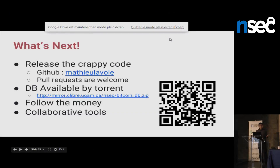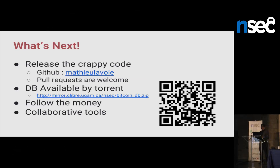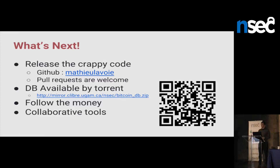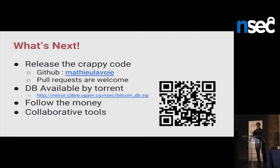What's next for my tools: release the crappy crawler code so you can crawl the network. You can take the DB from there and continue crawling. The DB that will be available was made the Monday before this week, so you can continue crawling from that block and go further. That gives you all the node IDs representing entities and the addresses related to each node ID. What you can do right now is take every address, find something interesting on the internet using Google, and then find other addresses associated with the same entity.